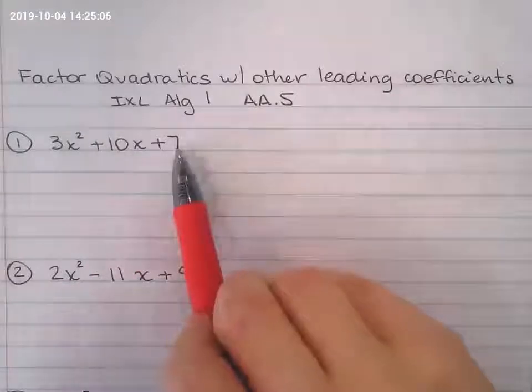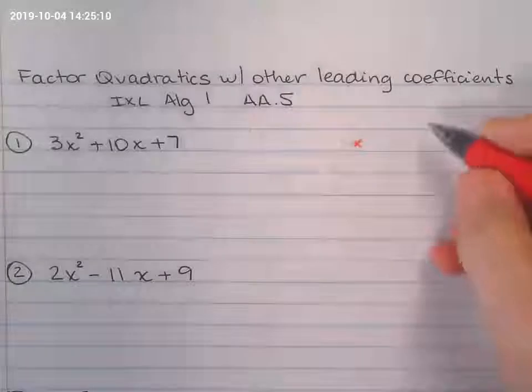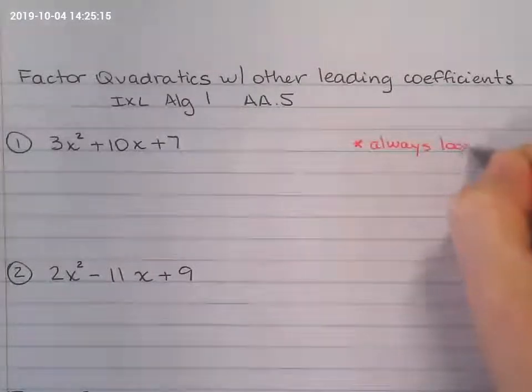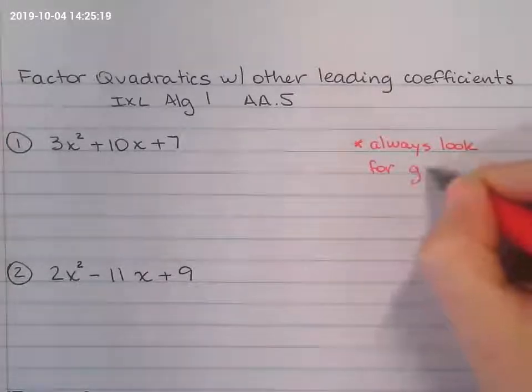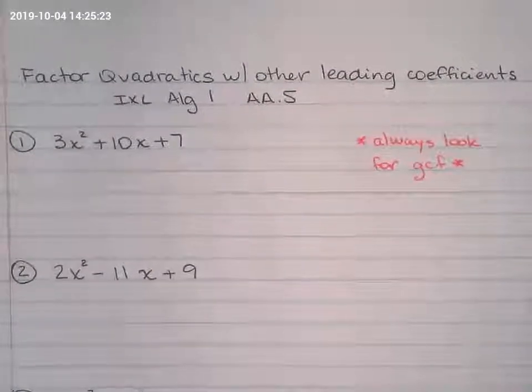I don't have the greatest common factor. So the hint right there is to always look for GCF first. That might make your life a lot easier.